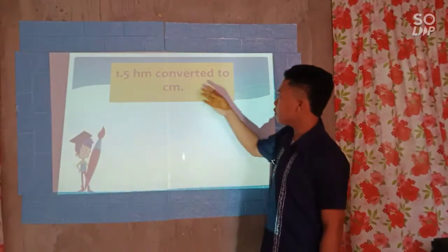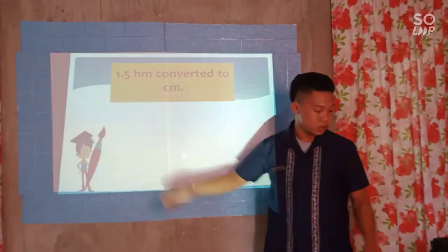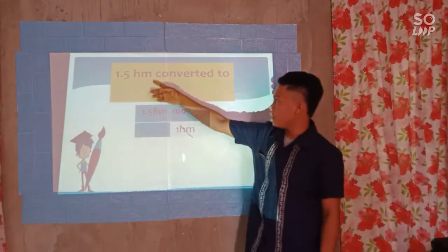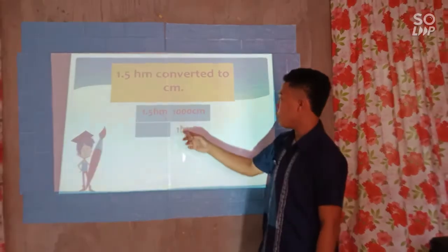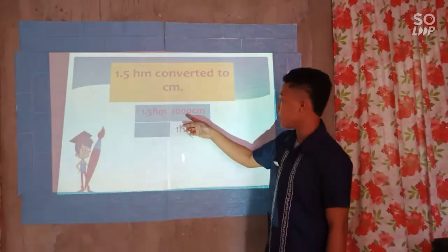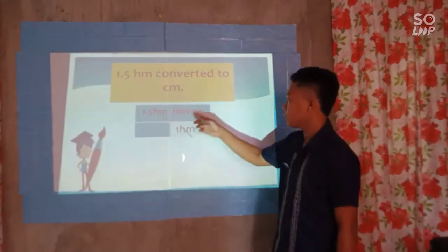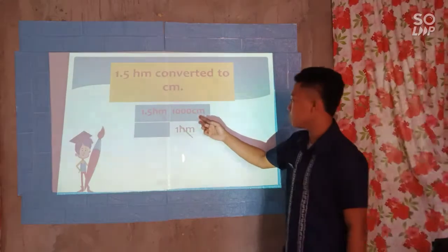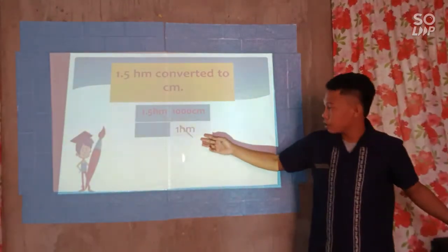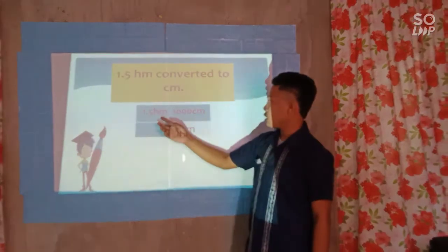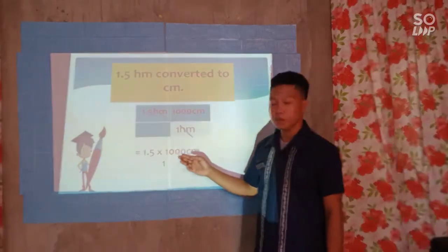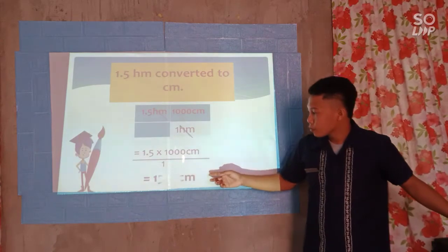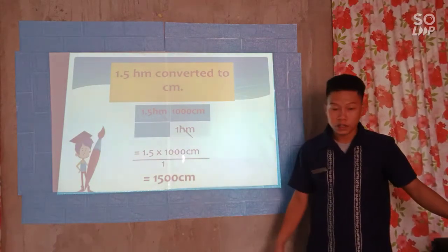Next example: convert 1.5 hectometers to centimeters. Our given is 1.5 hectometers. Since we are finding centimeters, 1 hectometer is equivalent to 1,000 centimeters. So, 1.5 hectometers times 1,000 centimeters over 1 hectometer — cancel out the same unit — 1.5 times 1,000 centimeters is equal to 1,500 centimeters.